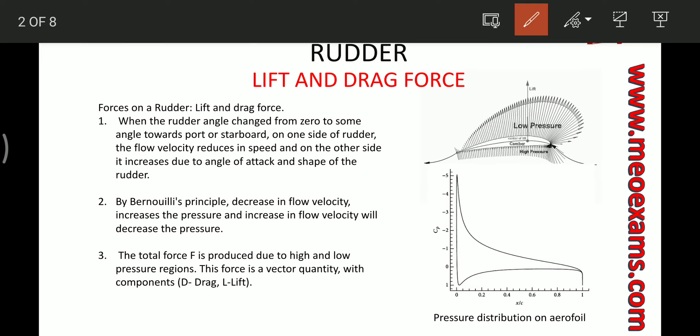Let's see how these forces are developed on the rudder. When the rudder angle is changed from 0 to some angle towards either port side or starboard side, on one side of the rudder the flow velocity will reduce, and on the other side the velocity will increase. This happens because of the shape of the rudder and angle of attack. Because of Bernoulli's principle, where there is a decrease in velocity the pressure will increase, and where there is an increase in velocity there will be a decrease in pressure. Because of this difference in pressure, a net force is produced on the rudder.